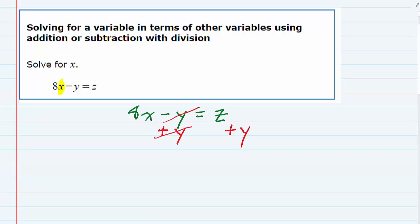And then on the left, the y's are going to cancel. So I still have the 8 and the x on the left-hand side of the equation. And on the right-hand side, the z plus y, those are not like terms, so I'm just going to rewrite that as z plus y. No simplification that I can do there.